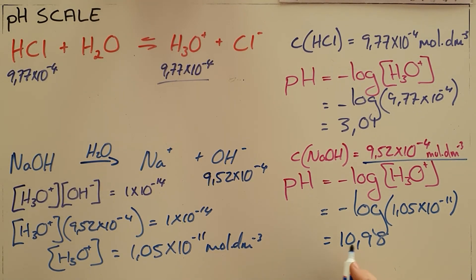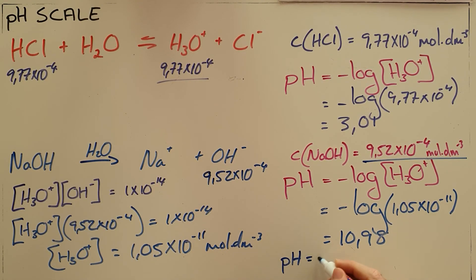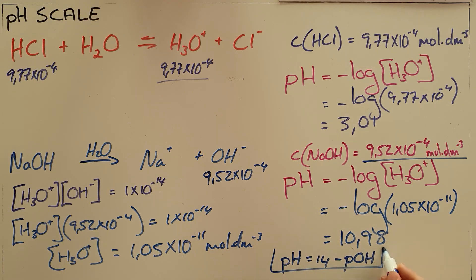You will see that it is also at times possible to calculate the pH by using something called pOH, so it's just 14 minus essentially the inverse of our hydronium concentration. We prefer not to teach this method as the way in which it is marked in exams is sometimes unclear, so we rather use this method that is always marked correctly and in the same format.